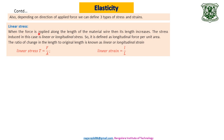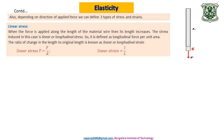First is linear stress. When force is applied along the length of a material wire, its length increases. The stress induced is linear or longitudinal stress, defined as longitudinal force per unit area. The ratio of change in length to original length is known as linear or longitudinal strain. Look at this diagram: we have a uniform wire of initial length capital L. Apply force along the length — this is linear or longitudinal force. There is a change in length, small l. Therefore, linear strain = change in length / original length.